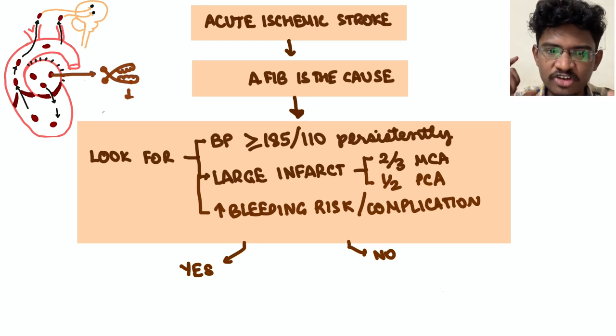or if he has a massive infarct, meaning more than two-thirds of the MCA territory or more than half of posterior cerebral artery. If these are there then it's ominous, so here you shouldn't give anticoagulation because the risk of bleeding is more.